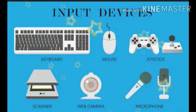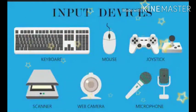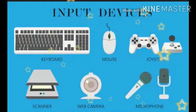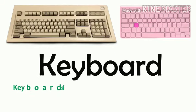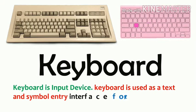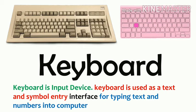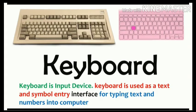First, input devices. Input devices are used to enter raw data and instructions into a computer. The following parts are the main input devices of a computer. First part: keyboard. Keyboard is an input device. It is used as a text and simple enter interface for typing text and numbers into a computer. Keyboard is used for typing text and numbers.